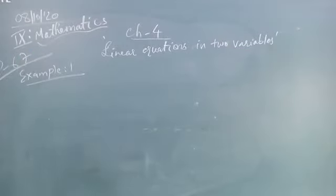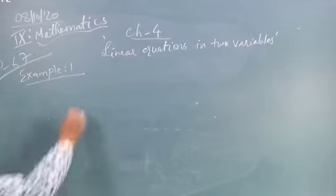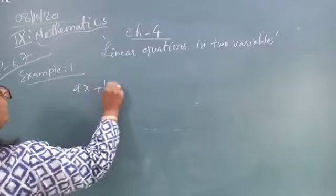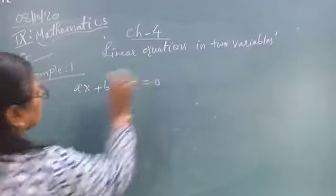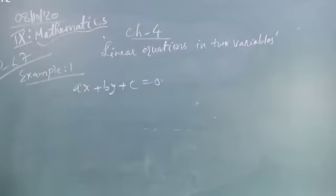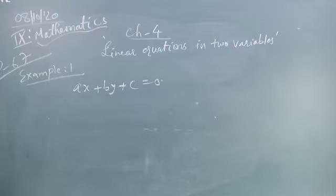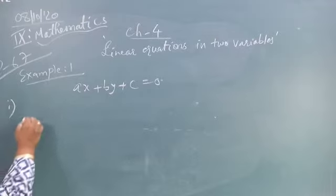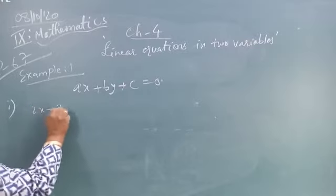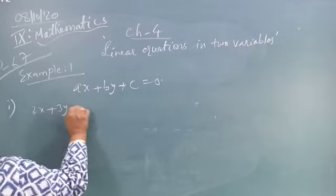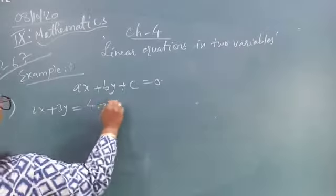The question is like this: Write each of the following equations in the form AX plus BY plus C is equal to 0. This is the standard form of the equation. Indicate the values of A, B, and C in each case. Now equation 1 is: 2X plus 3Y is equal to 4.37.